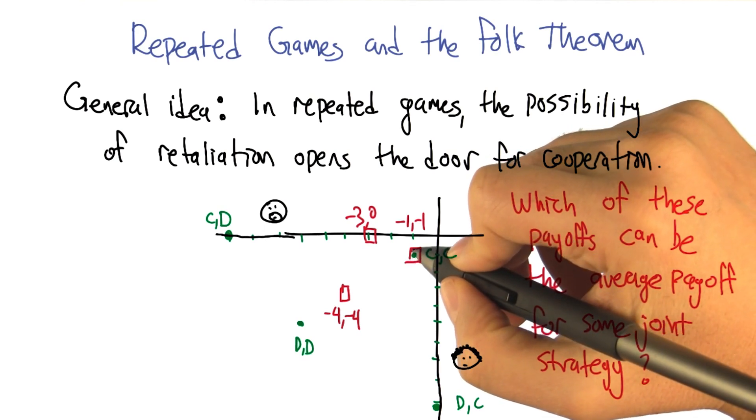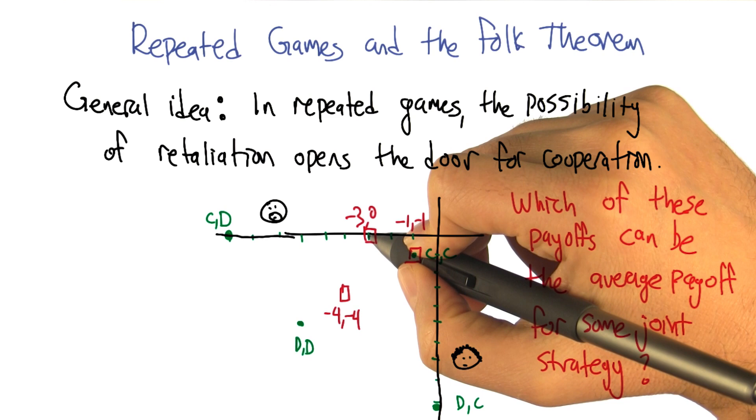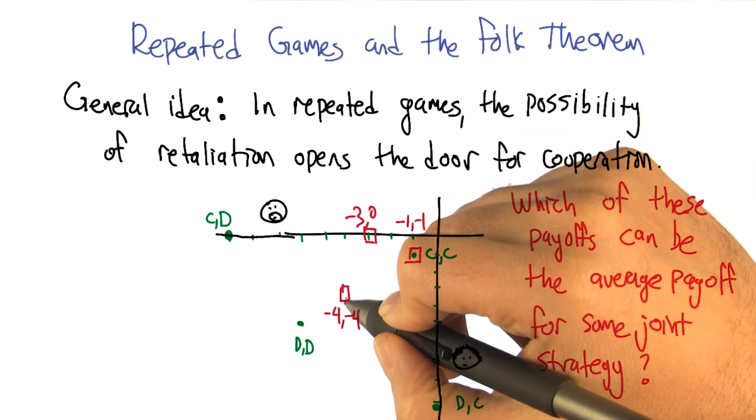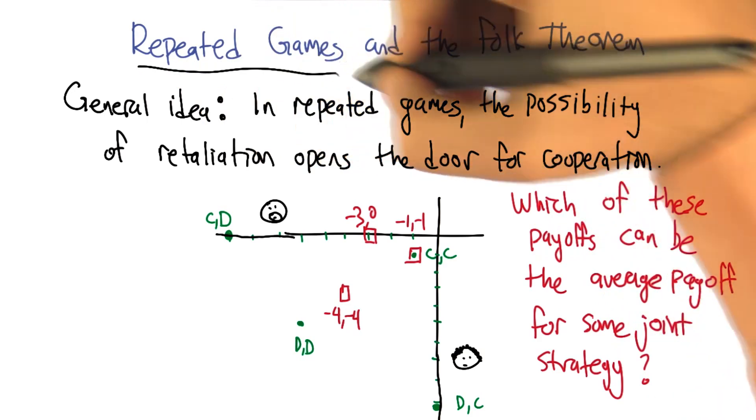Here's four payoffs that I've put little boxes around. This one at minus 1, minus 1. This one at minus 3, 0. And this one at minus 4, minus 4. And the question is, which of these payoffs can be the average payoff for some joint strategy? And this is in the repeated game setting.